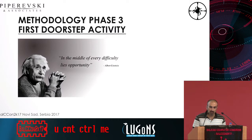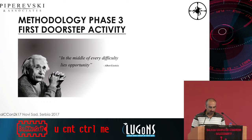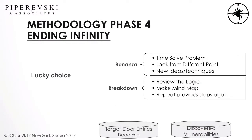In the middle of every difficulty lies an opportunity. What happens with those doors we have discovered and tested with no result, no vulnerability, no finding? The next step is ending infinity. We have a lucky choice: bonanza or breakdown. Bonanza means, for example, you go out on Friday, get a couple of beers, get a good sleep on Saturday, go hiking on Sunday, and on Monday morning you have a completely different set of thoughts and come up with a solution — finding a vulnerability. Time solves problems; look for a different point of view and new ideas and techniques.